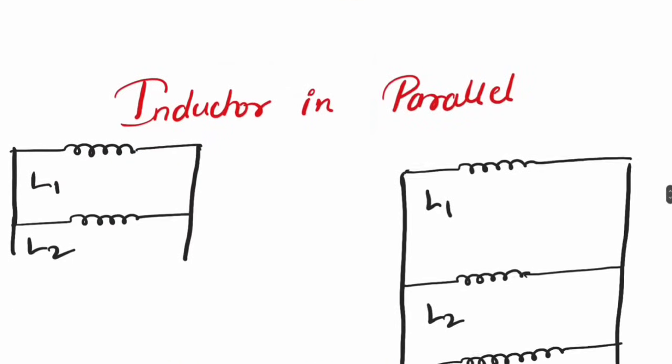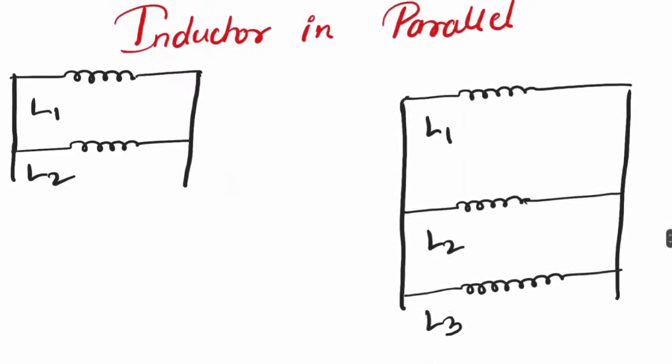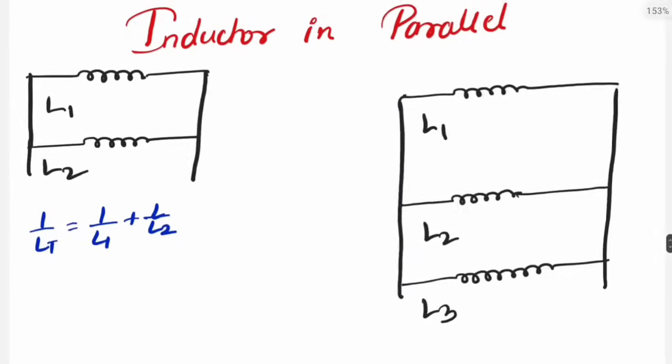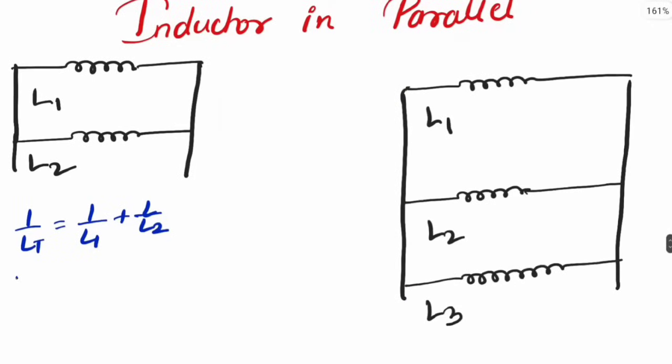Let's begin with inductance in parallel. It is exactly same as resistance in parallel, as I have already mentioned. My 1 upon Lt would be 1 upon L1 plus 1 upon L2. It would be as we can directly write Lt as L1 into L2 upon L1 plus L2.